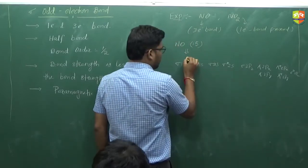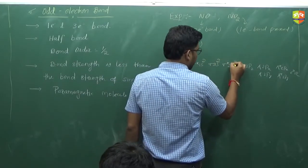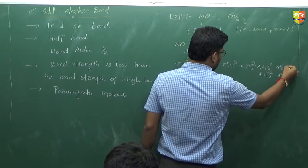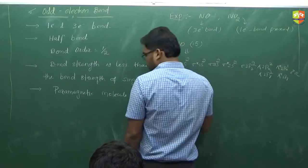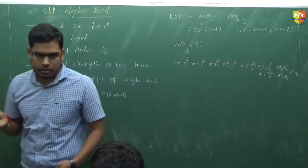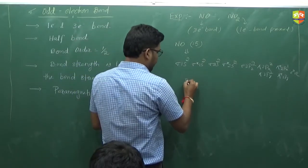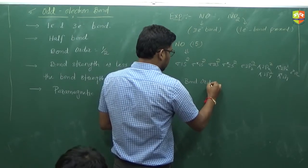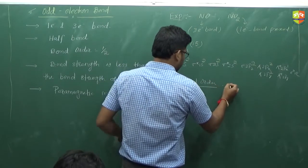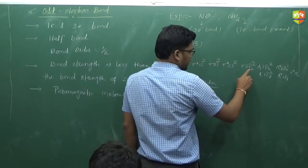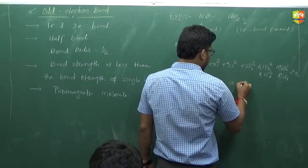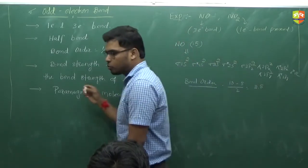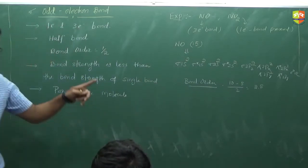When you distribute the electrons: 2, 4, 6, 8, 9, 10, 11, 12, 13, 14, and 1 here — giving 15 total. What is the bond order you get? Bonding electrons minus antibonding: 10 bonding electrons, so 10 minus 5 divided by 2 equals 2.5. Bond order is 2.5.